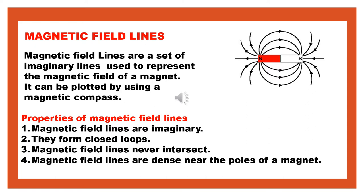Let us see the properties of magnetic field lines. Magnetic field lines are imaginary — they are not actual lines. They form closed loops: you can see that a line starts from the north pole and ends at the south pole. They never intersect each other, as you can see in the picture.